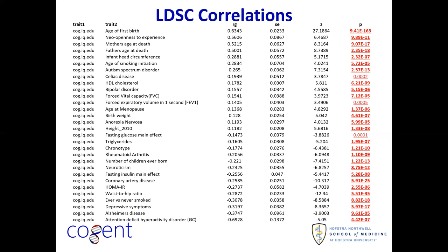Shifting gears, we zoomed out of the brain and asked what other phenotypes have genetic architecture related to cognitive ability. Trait 1 is the MTAG results summary statistics. Sorting genetic correlations, we see a strong developmental flavor at the top: age of mother at first birth, how old one's parents are before passing, and ADHD. The earlier results also provide context for these findings and underscore the importance of neurodevelopmental mechanisms underpinning cognition.